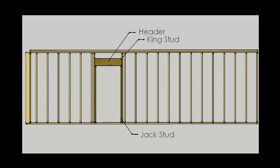For the header to transfer overhead load from the top plate, that load has to reach the header. This is achieved by the last piece of the frame — smaller studs called cripples. With the cripples in place, we can now see how the load moves from the top plate through the cripples, across the header, and down the jack studs into the rest of the building system.